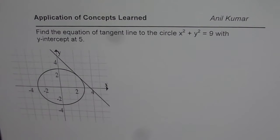I am Anil Kumar and in this video we will apply some techniques learned to solve the question. The question here is, find the equation of tangent line to the circle x square plus y square equals to 9 with y intercept at 5.